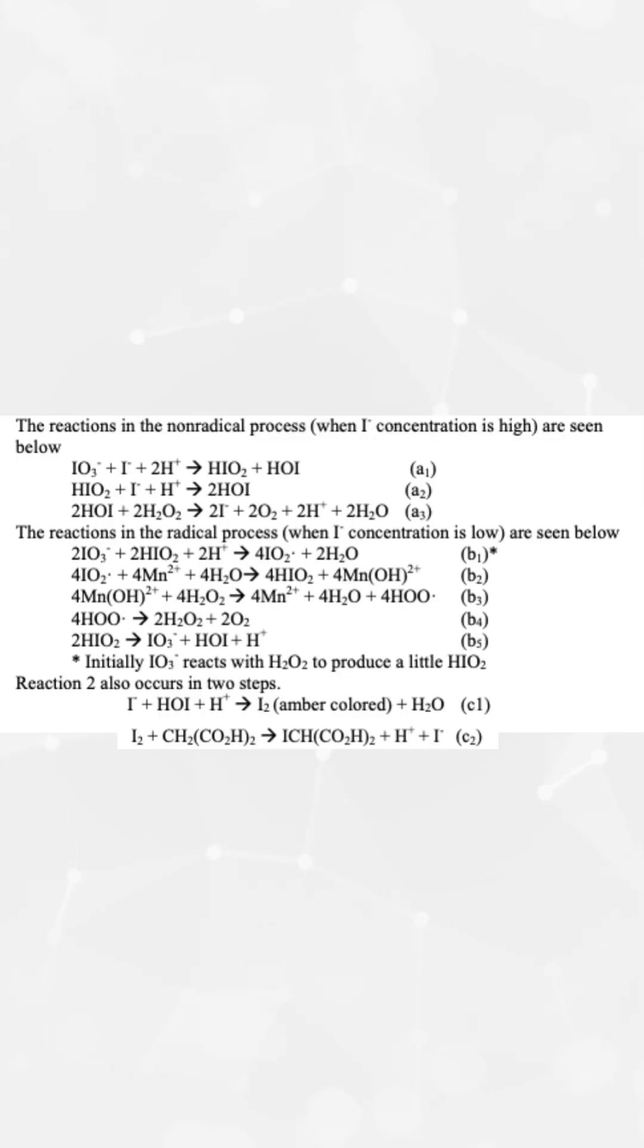...produce iodomalonic acid. The first step can proceed via two pathways: a rapid radical process when iodide concentration is low, or a slower non-radical process when iodide is high. During the radical process, HOI forms faster than it can be consumed, producing a temporary amber color due to iodine formation.